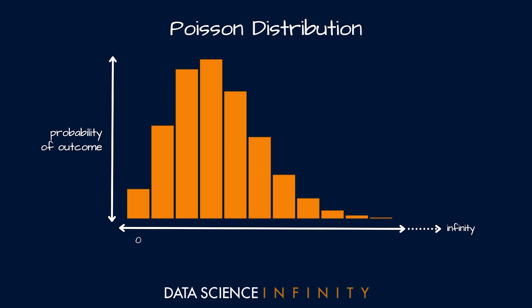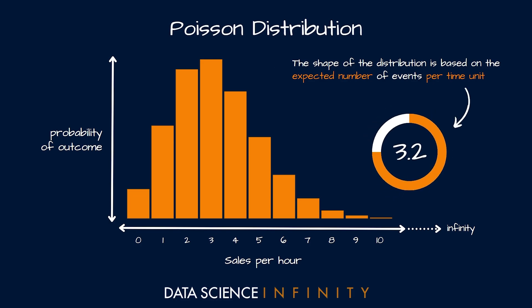So let's say that we ran a shop and we wanted to understand the distribution of the sales that we make per hour. Now the spread of data, or in other words the shape of the distribution, is all based on the expected number of events per time unit. For this particular distribution I have used an expected sales per hour value of 3.2, and this would result in these probability values for each potential number of sales per hour.